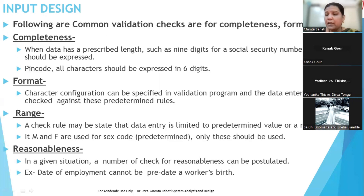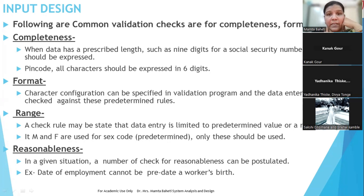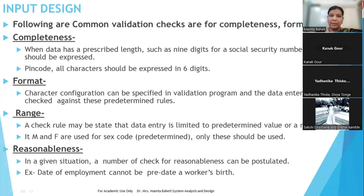Now if we have to check validation, we need to check several things. First, data should be complete. For example, a PIN code should be 6 digits — valid data means exactly 6 digits. When someone types a PIN code, its length should be 6 and only 6 digits. Similarly, a phone number should be 10 digits. Some people write +91 for India, but if you need just a 10-digit number, then check whether the data is complete or not — this is part of your validation checks.